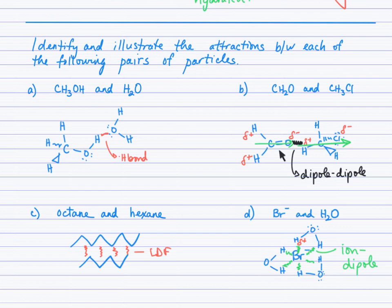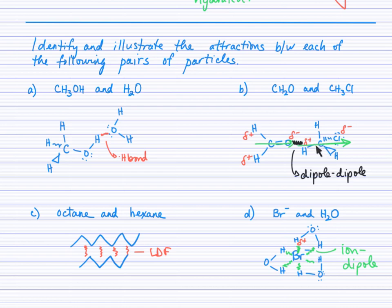CH₂O is a polar molecule — the molecular dipole is indicated in green. CH₃Cl is also a polar molecule — the molecular dipole is indicated in green. The attraction shown between the partially negative end of one polar molecule and the partially positive end of the other indicates a dipole-dipole attraction. The molecular dipole of CH₃Cl should be shown as smaller in size since it is not quite as polar as CH₂O.